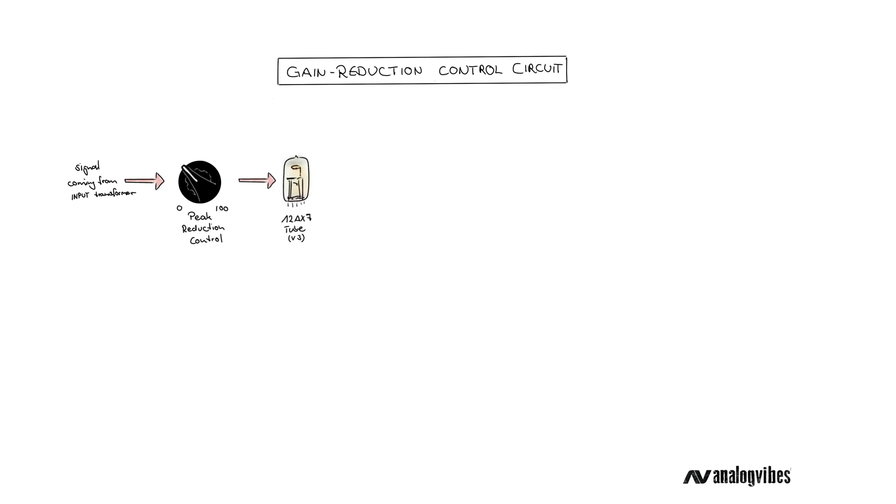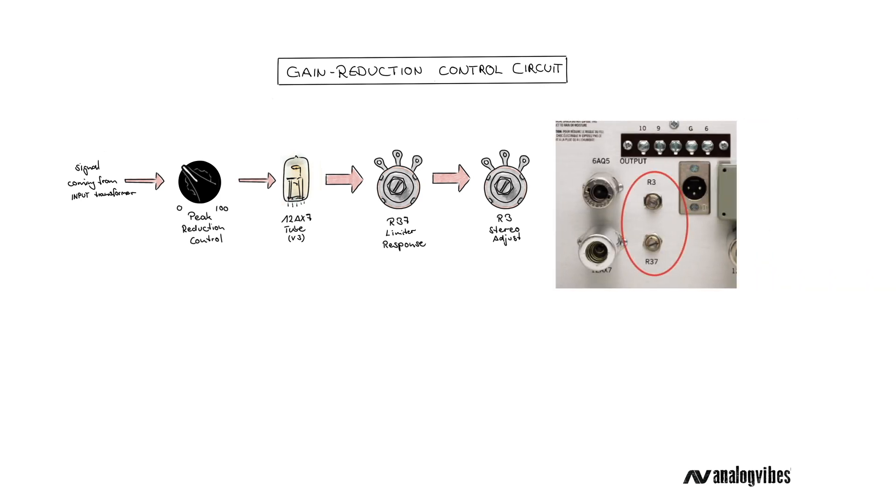Next, that signal is being amplified by a 12AX7 tube before it hits the limiter response trim pot R37 and the stereo adjust trim pot R3, both mounted on the back of the unit.